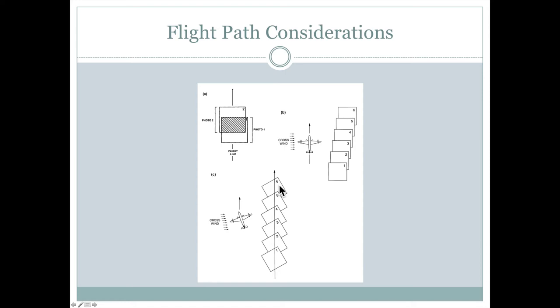So these kind of flight path considerations can be important when we look at aerial photographs because they're really going to define this area of overlap and how these subsequent pictures relate to each other.